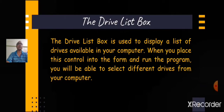Let us understand the function of DriveListBox. The DriveListBox is used to display a list of drives available in your computer. The basic property of this control is the Drive property, which sets the drive to be initially selected in the control or returns the user's selection. When you place this control into the form and run the program, you will be able to select different drives from your computer, giving access to the files in the secondary memory of the computer.